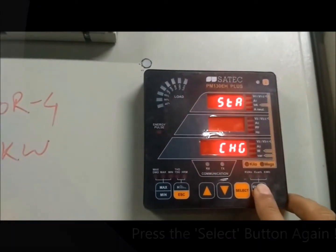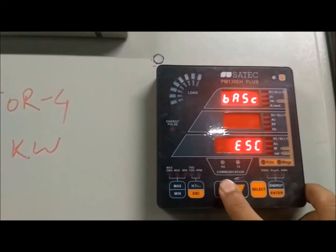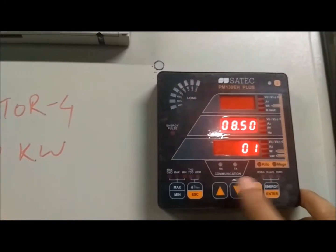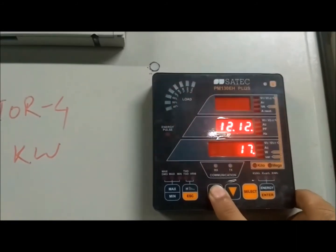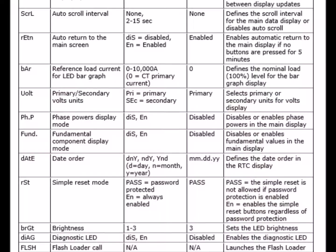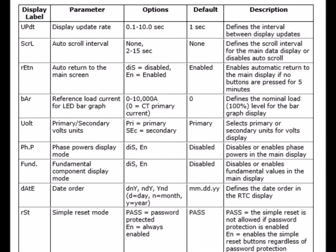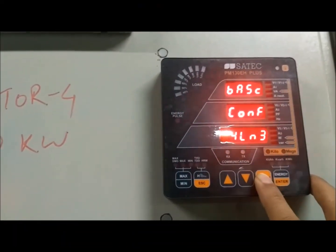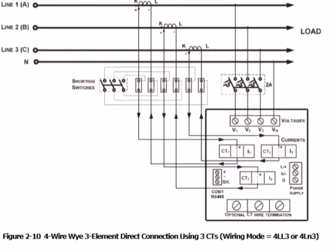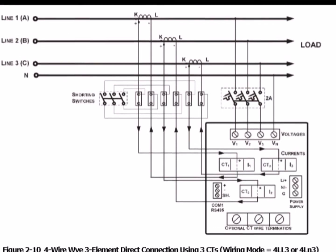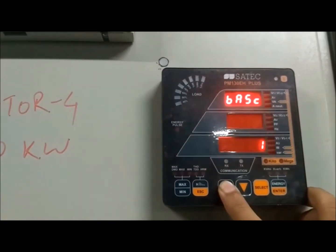Now let's go back to the main setup menu where you can review the settings but cannot change them — you can only see what settings have been fitted. Starting with the basic settings, here you can see the date, time, and day. 4LM3 means four-wire three-element, the star connection where three CTs and three PTs are used. You can see the PT here, which is fitted at 60:1.